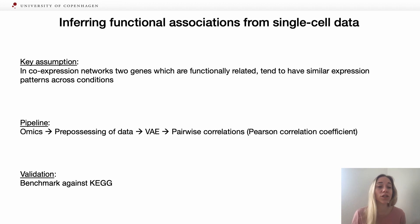That's what we did. Here you can see an overview of our hypothesis and our pipeline. The main hypothesis is that in co-expression networks, two genes that are functionally related tend to have similar expression patterns across conditions.